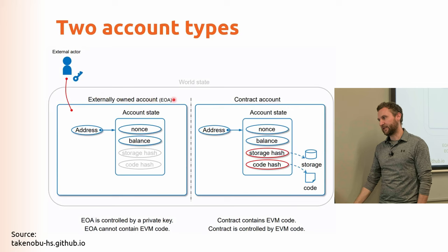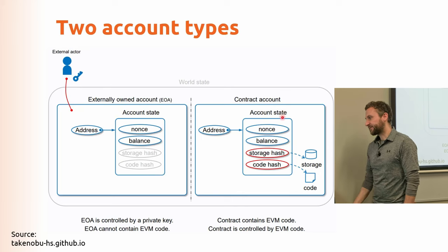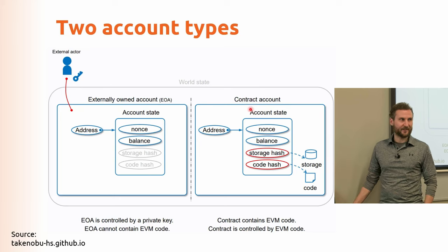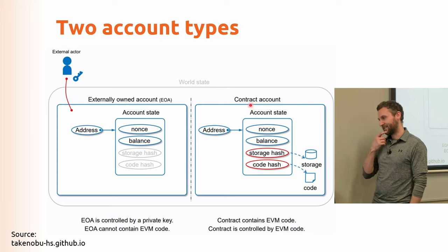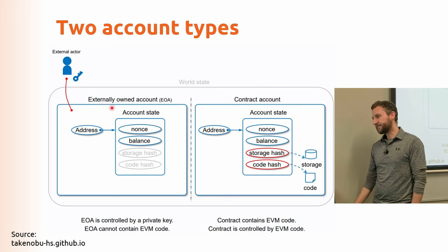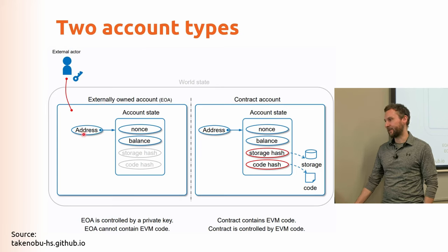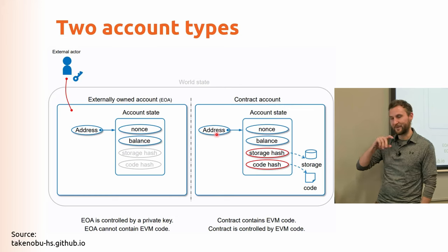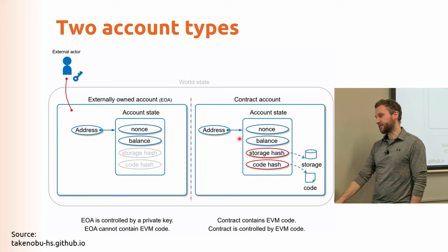There are two account types in Ethereum. An externally owned account has an address, nonce, and balance, controlled by a private key. A contract account has the same plus access to storage and code - but no private key. A contract has an owner whose private key controls it. Both types are 160-bit addresses and look identical as strings, so you have to look them up to know which type it is.